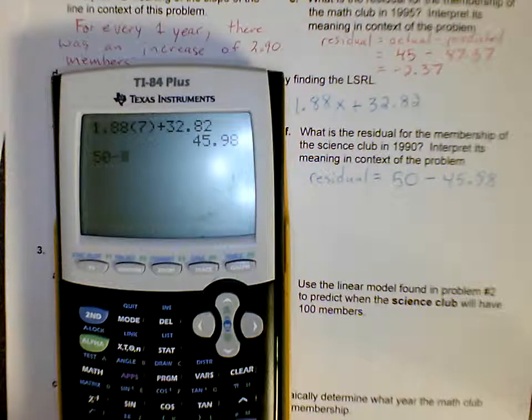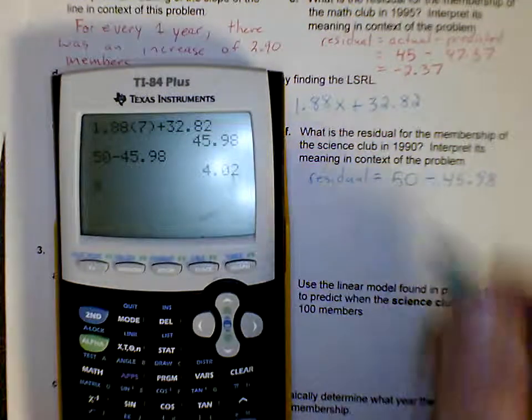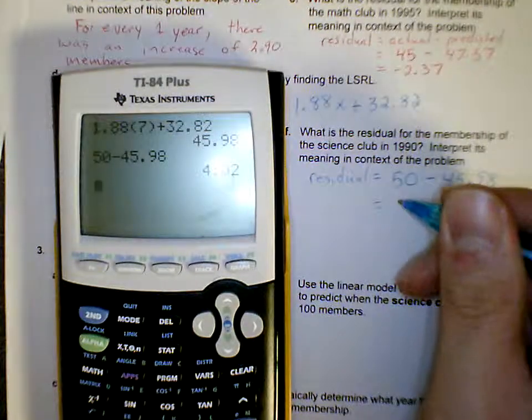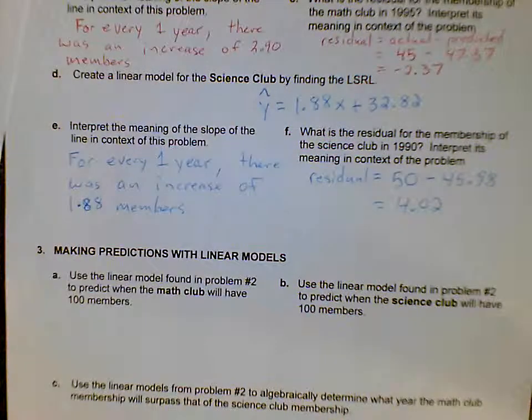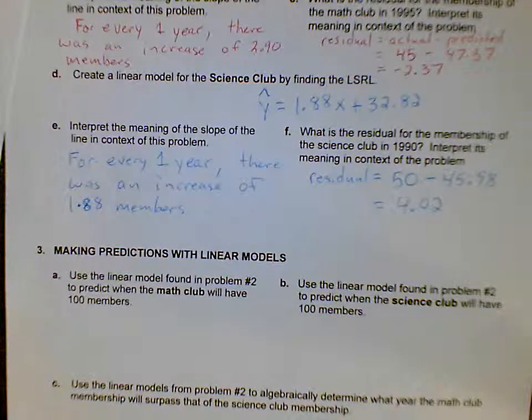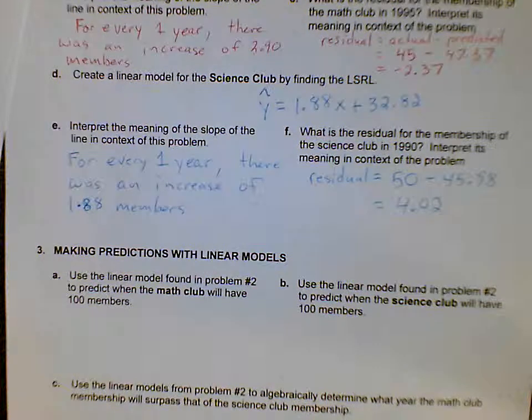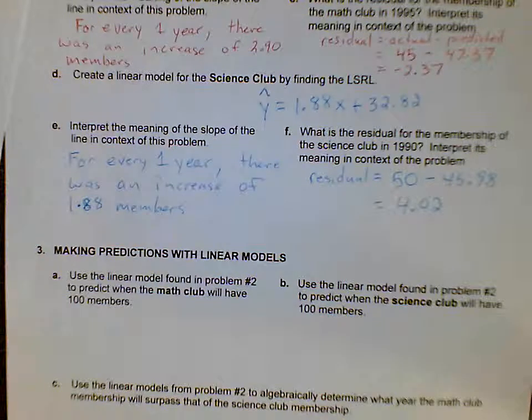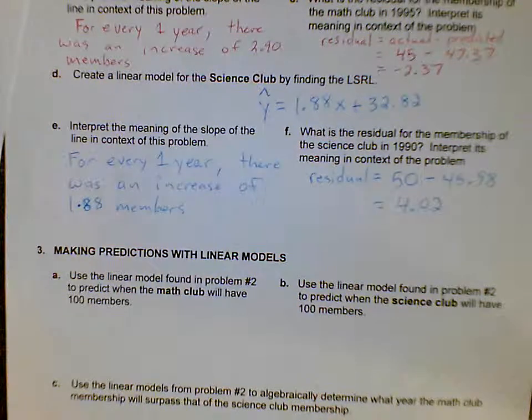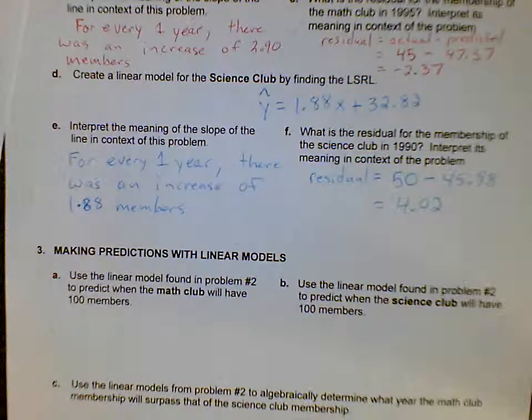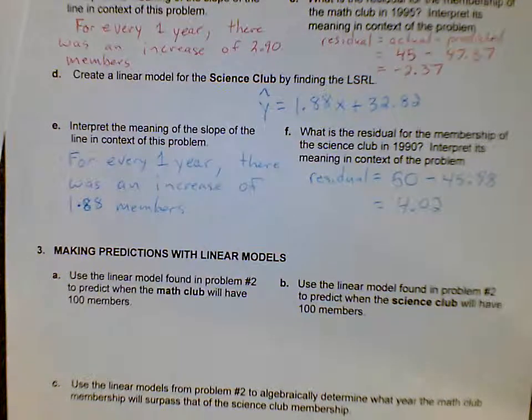And then when I do my subtraction of 50 minus 45.98, that equals a residual of 4.02. And with this one we have to interpret its meaning in the context of the problem. So on average, in the year 1990, we were about 4 members above the average. So 4 members above what we would predict. Alright, and one last video, go ahead to question number three.